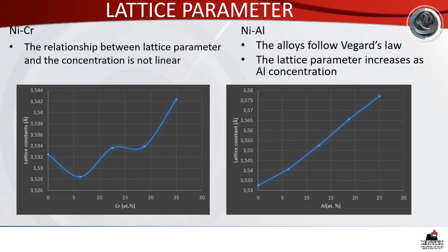For the results, starting with the lattice parameters of both nickel-chrome and nickel-aluminium alloys: for nickel-chrome alloys, the relationship between lattice parameter and chromium concentration is not linear. There is a decrease between 0 and 6.25 atomic percent chromium, followed by an increase between 6.25 and 25 atomic percent chromium. For nickel-aluminium, the alloy follows Vegard's law and the lattice parameter increases as the aluminium concentration increases.